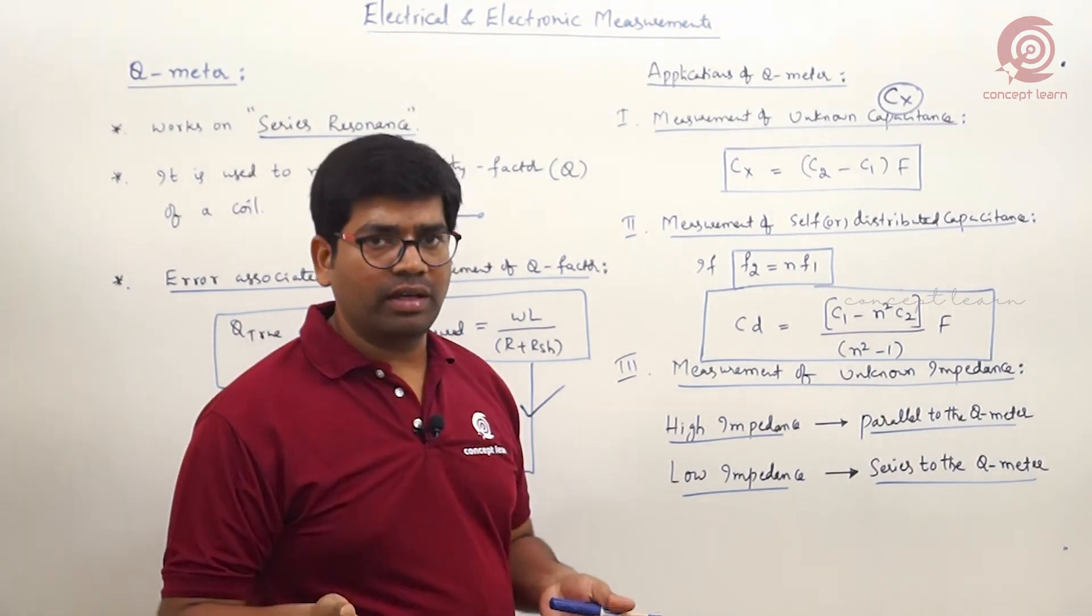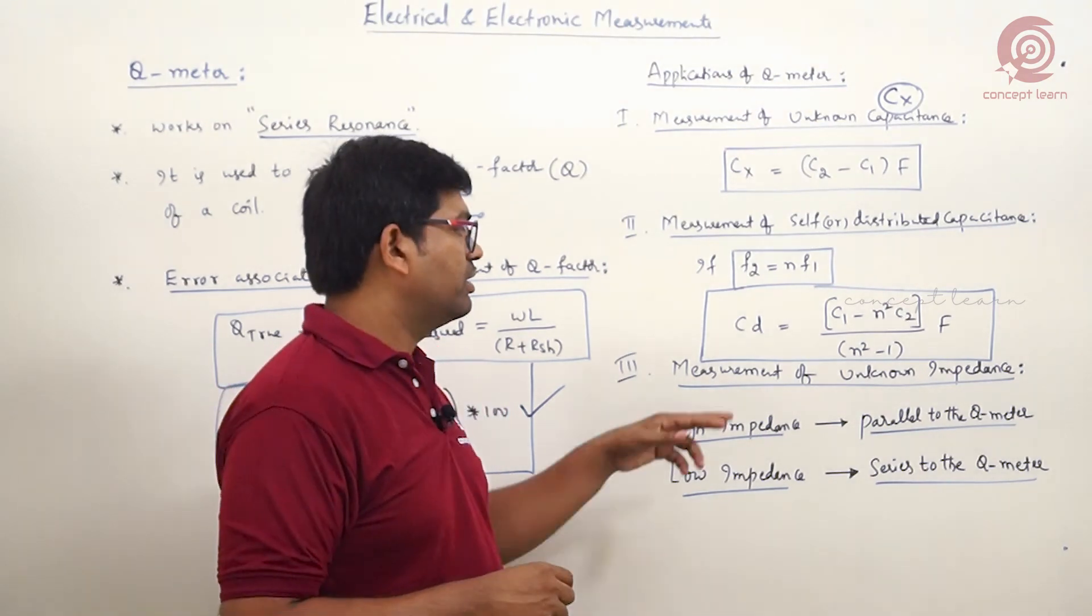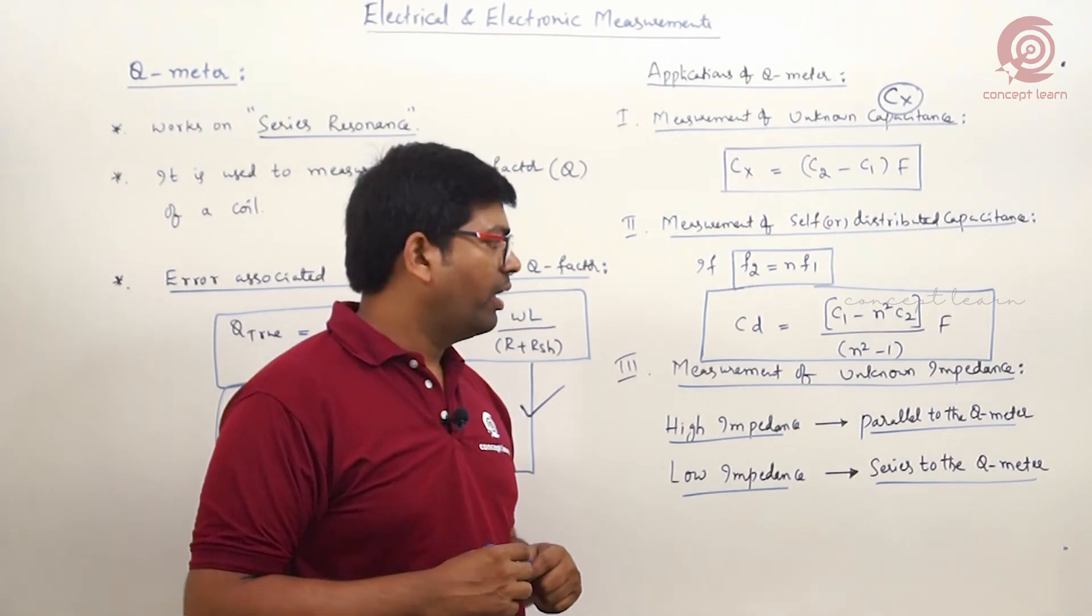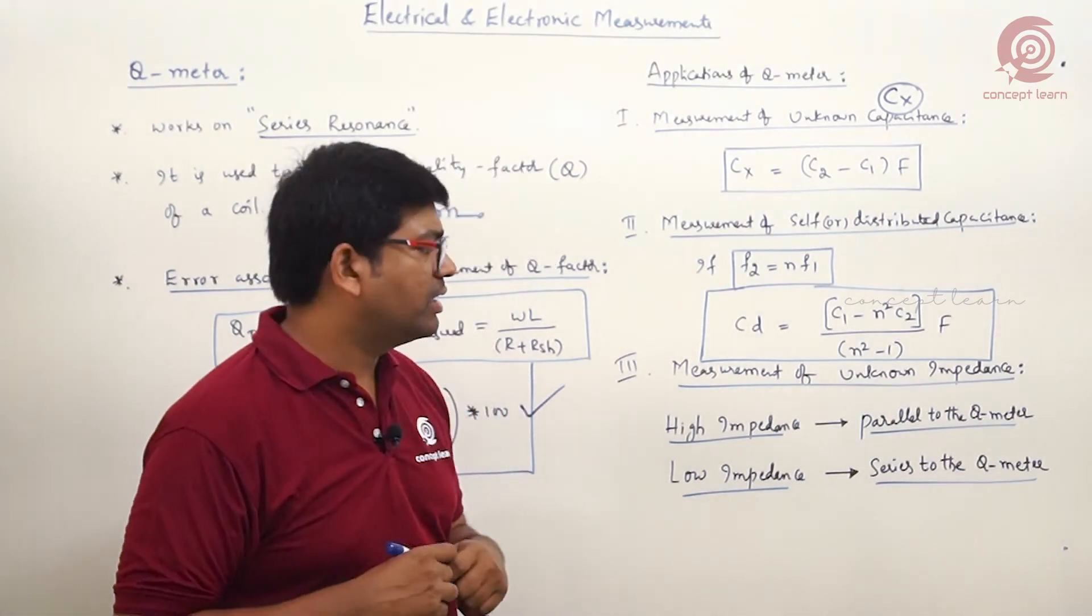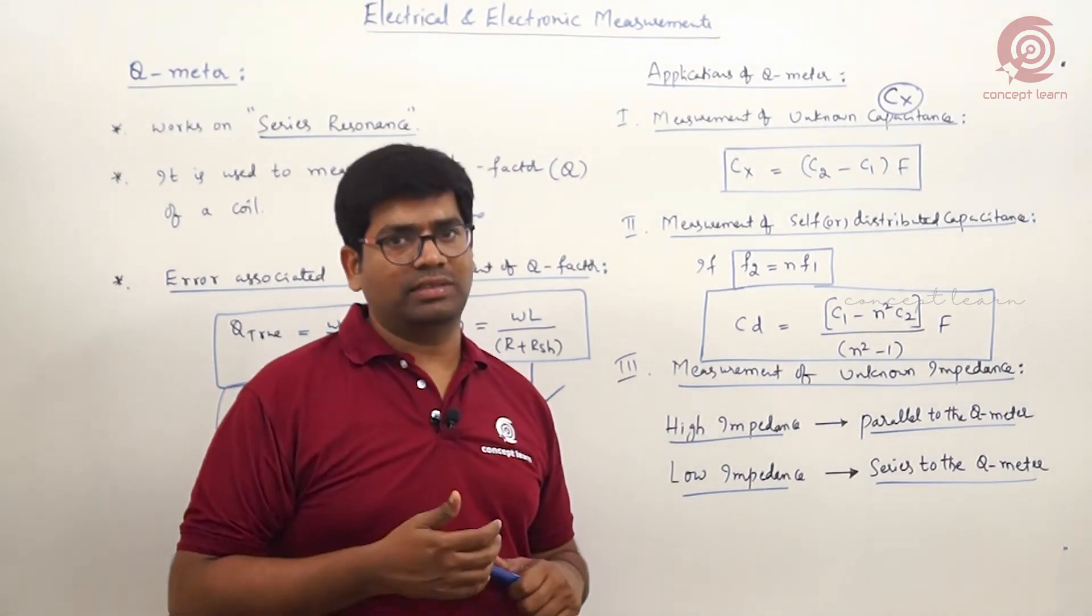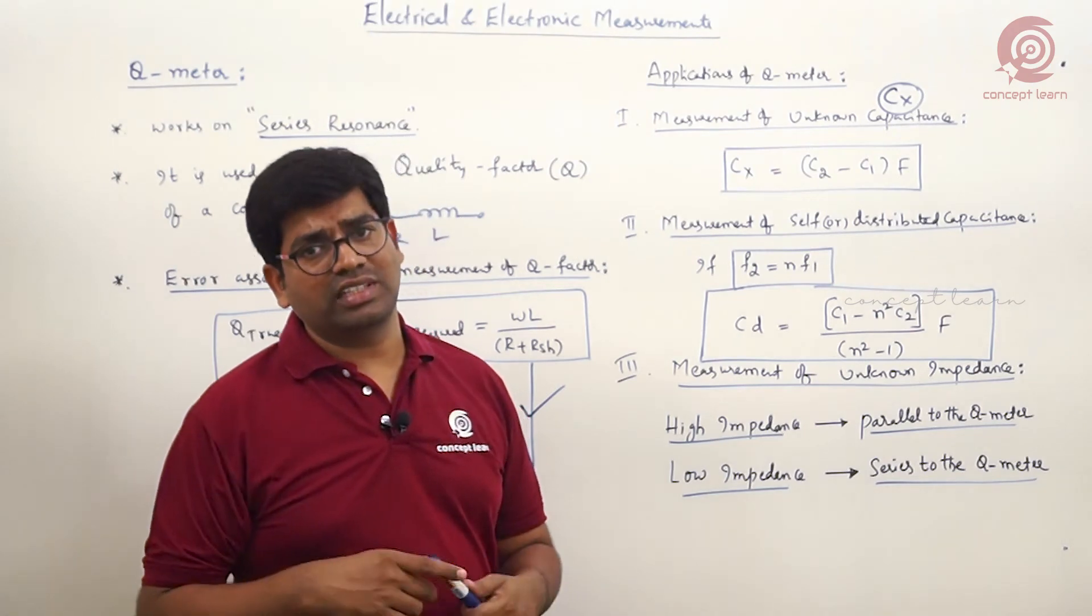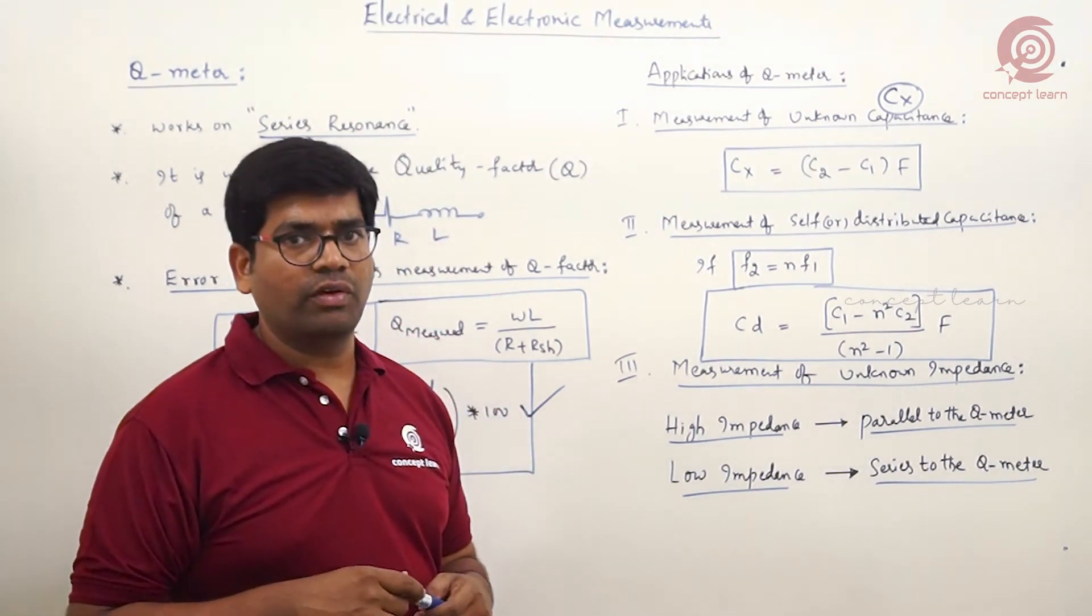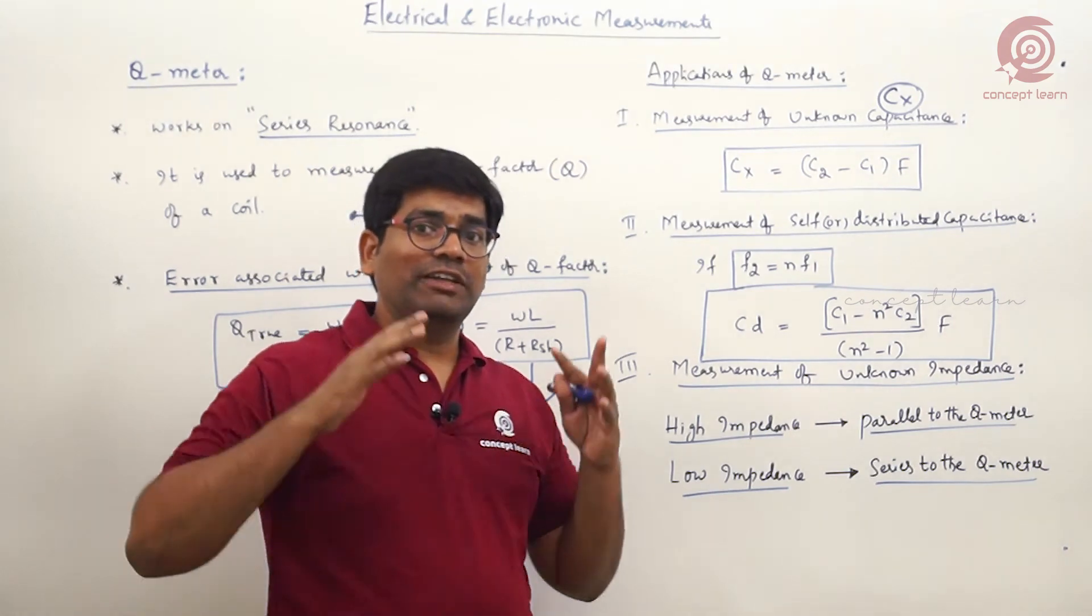n could be like 2, 3, even 3/2, or 4/5 - different values you can have for n in this expression. And even another application is there with Q meter. You can even measure the unknown impedance, which consists of resistance as well as reactance.